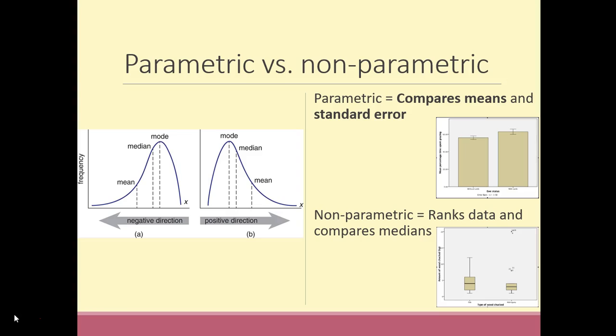To put it another way: if you have normally distributed data, the mean, median, and mode are all around the same place, so the mean is an accurate measure of central tendency and parametric statistics are the correct choice. If you have skew, the mean is pulled in either a positive or negative direction and is no longer representative of central tendency, but the median is little affected — so use non-parametric statistics, which compare medians.